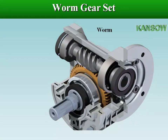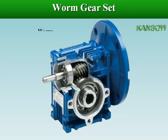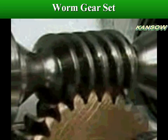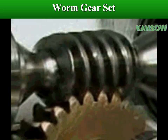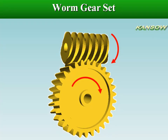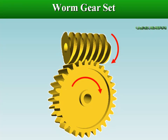The worm in a worm gear set is considered to be the pinion of the gear set, because a worm has very few threads or teeth. A worm gear set has a very high gear teeth to pinion teeth ratio, and is generally used in situations where a large speed reduction with a subsequent large increase in torque is needed.